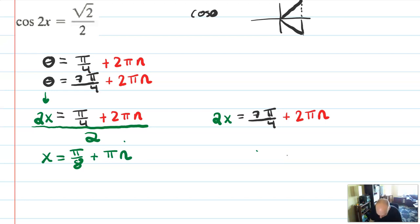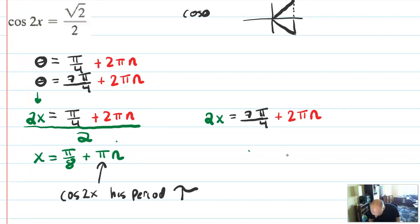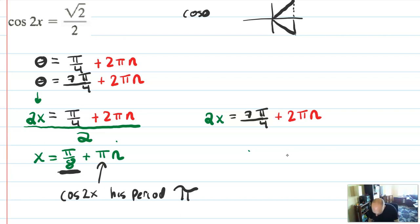Here's a graphical connection. Cosine of 2x has what period? To find the period you do 2π divided by b, and b is 2, so 2π divided by 2 equals π. So cosine of 2x has period π, and I just solved for that algebraically — I didn't have to think about 2π over b. My first solution is at π over 8, which is what I thought from the graph, and it repeats not every 2π but every π.